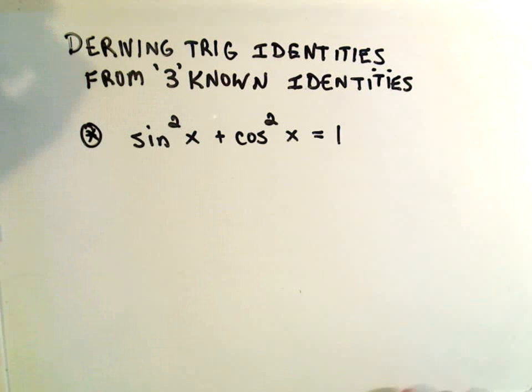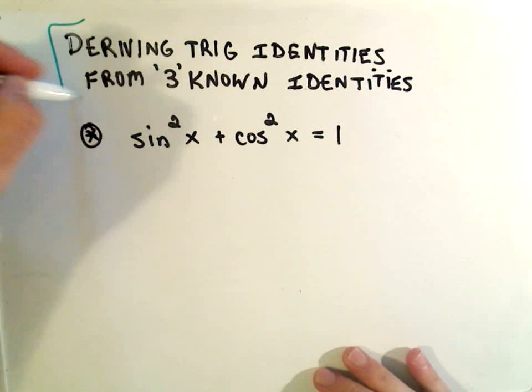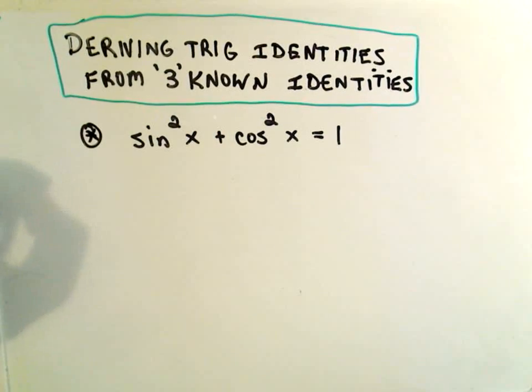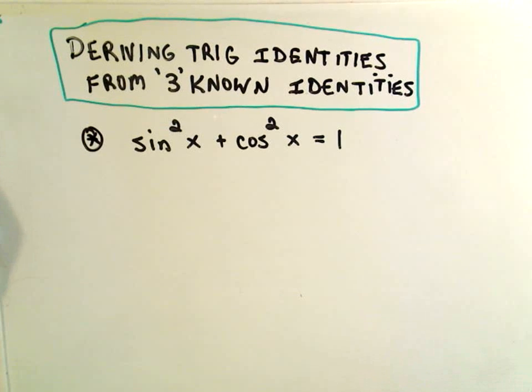Okay, in this video what I want to talk about is basically deriving a bunch of trig identities from only a couple of known identities. So people think you have to memorize a bunch of trig identities, and unfortunately you typically do in calculus, but at least here's a way to—I only have a couple memorized, and then I get all the rest of them really quickly. So here's how to do it.